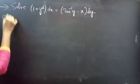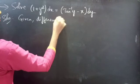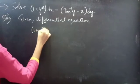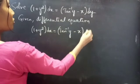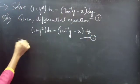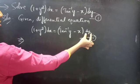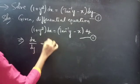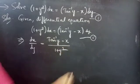Solution. Given differential equation: (1 + y²) dx equals (tan⁻¹y minus x) dy. Consider this as equation 1. Now, you can take dx to the RHS and bring dy to the LHS. Then we get dx/dy equals (tan⁻¹y minus x) divided by (1 + y²).